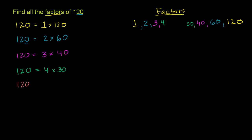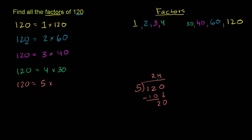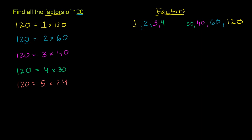Is 5 a factor — is 5 times something equal to 120? 120 ends with a 0. If you end with a 0 or a 5, you are divisible by 5. 5 goes into 120: it goes into 12 two times; 2 times 5 is 10; subtract, you get 2; bring down the 0; 5 goes into 20 four times; 4 times 5 is 20; no leftover. So 5 times 24 is equal to 120. We have two more factors: 5 and 24.